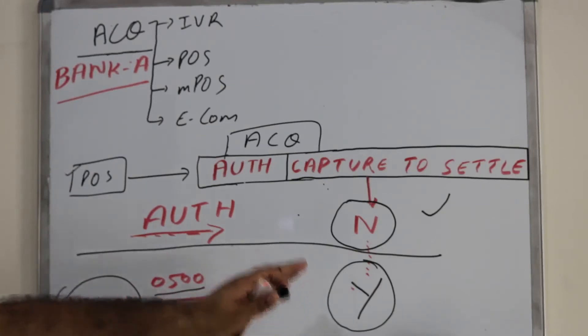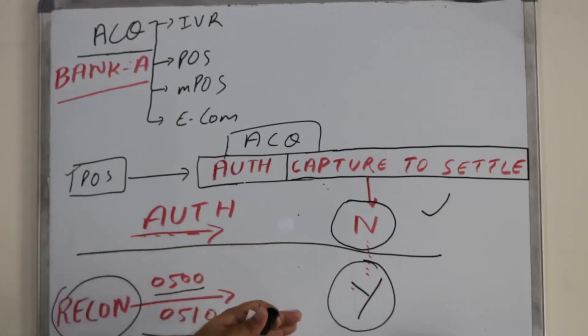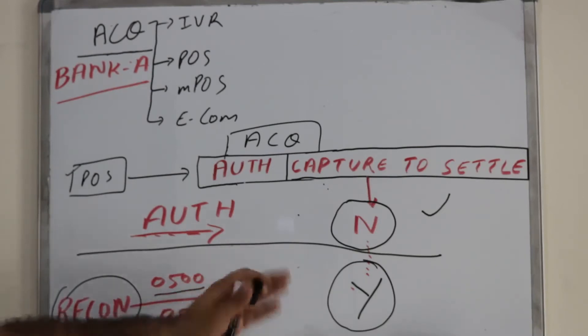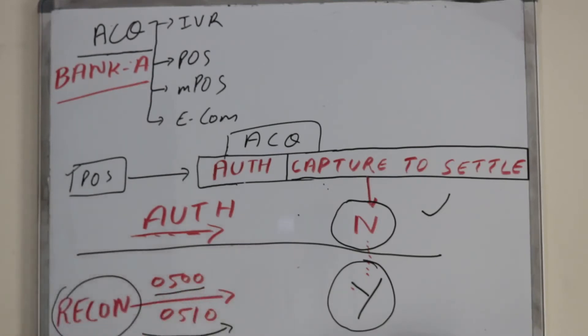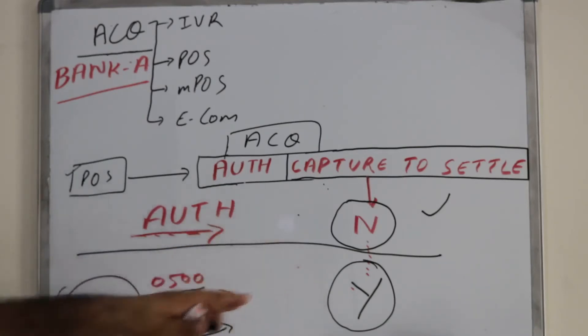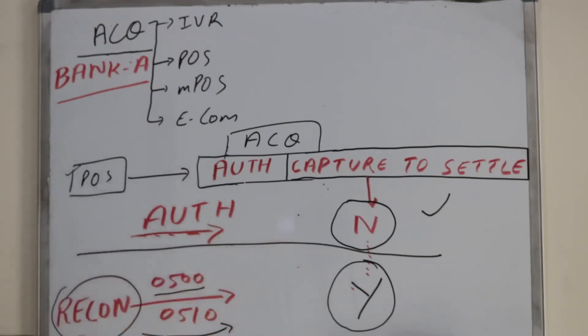The acquiring bank will check if the count, number of transactions, and the amount both match. If both are the same, everything is good, and the acquiring bank will send a successful response back to the POS machine — a 510 message.